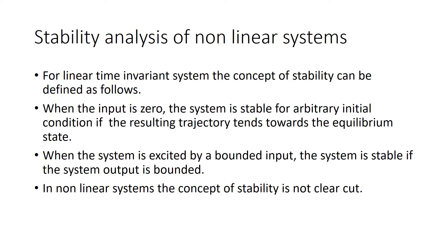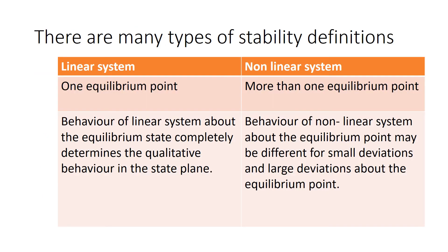In a linear system, stability is defined as bounded input, bounded output — when input is bounded and output is bounded, the system is stable. When input is zero, if the phase trajectory moves toward the equilibrium point, the system is stable. In a non-linear system, stability cannot be defined as clearly because we have more than one equilibrium point. There is a region containing equilibrium points, and the system should stay stable within that region. In linear systems there is only one equilibrium point; in non-linear systems there are more than one.